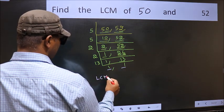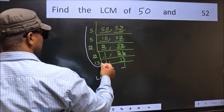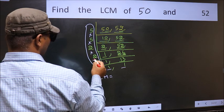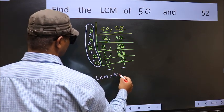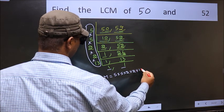So our LCM is the product of these numbers. That is 5 into 5 into 5 into 2 into 2 into 13.